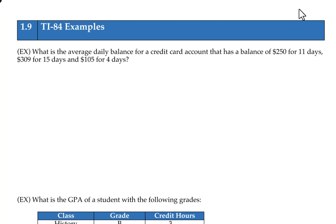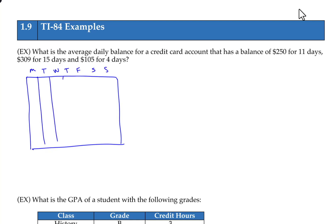The first example asks us to find the average daily balance for a credit card account that has a balance of $250 for 11 days, $309 for 15 days, and $105 for 4 days. To understand how this works, think of an actual calendar with the days of the week and individual weeks of the month.